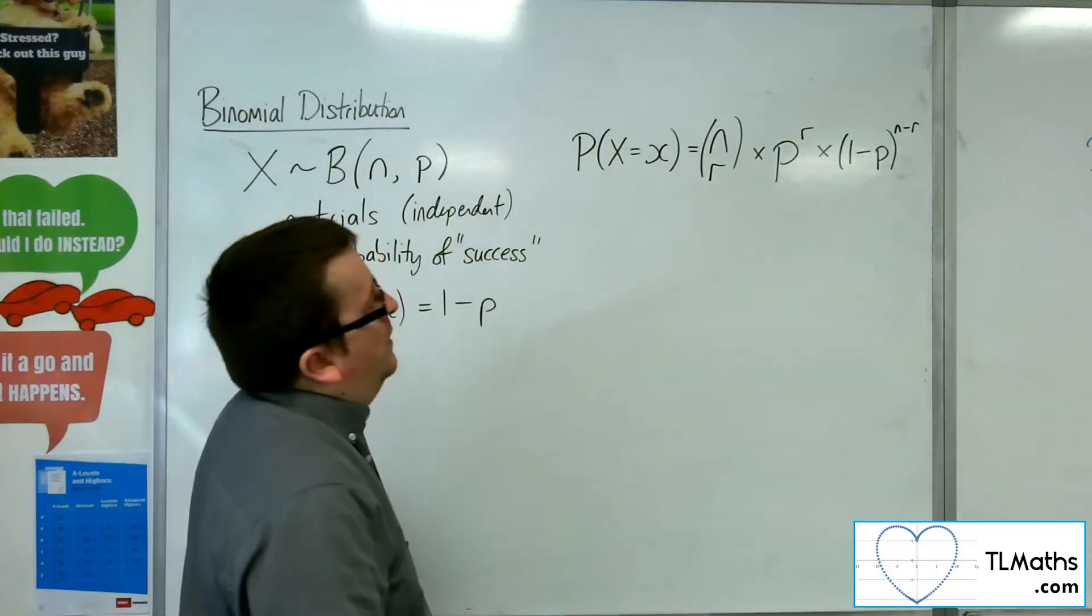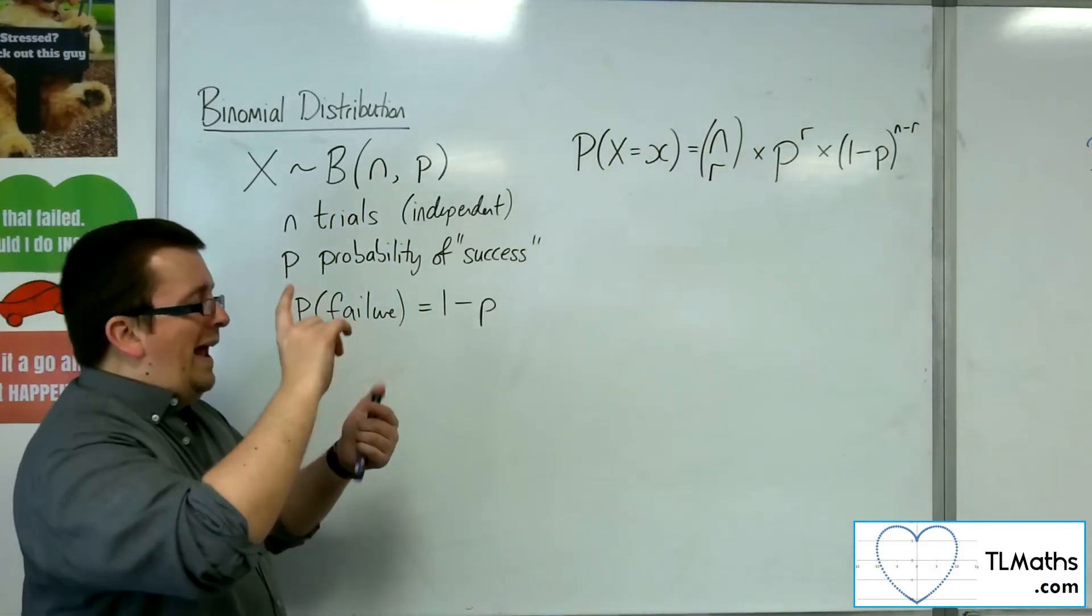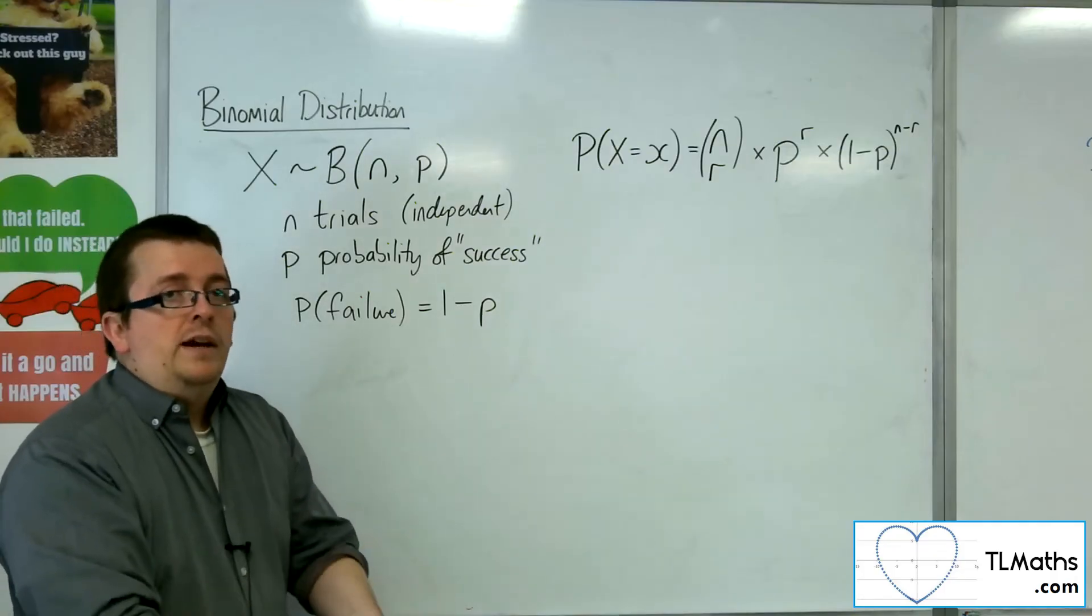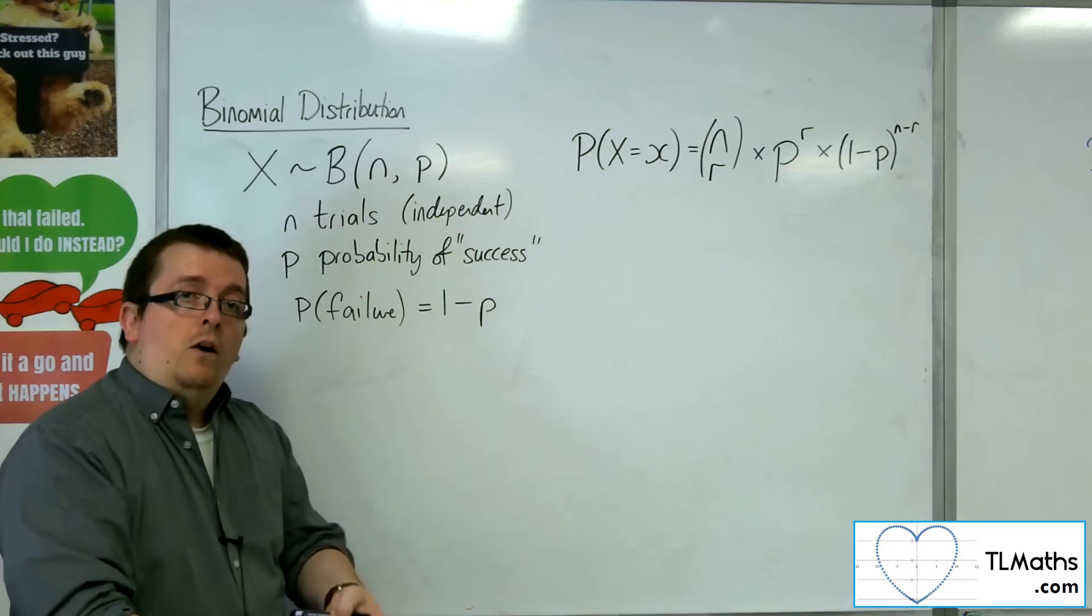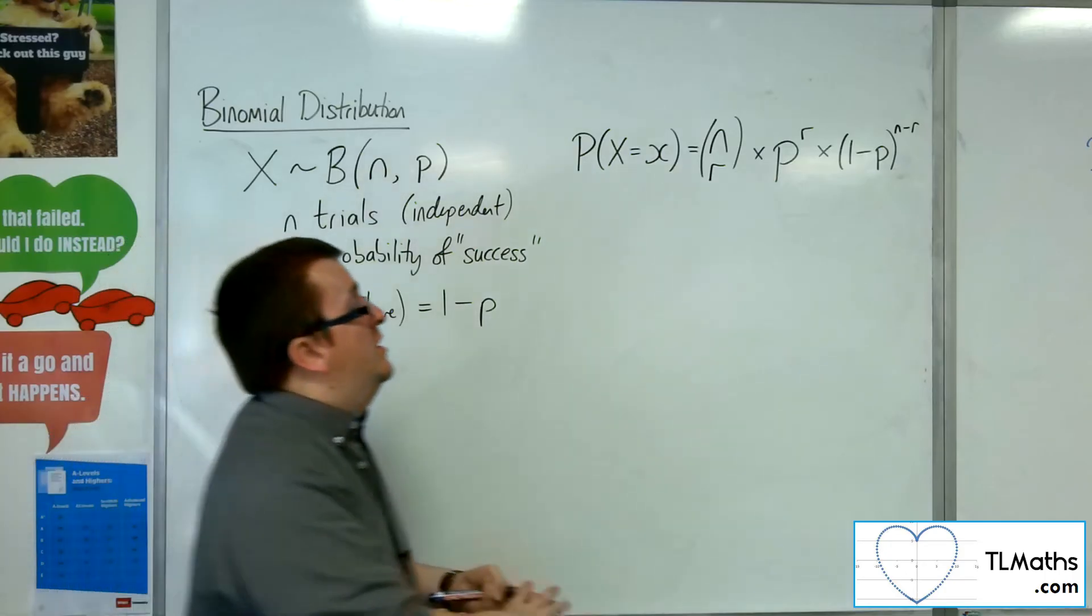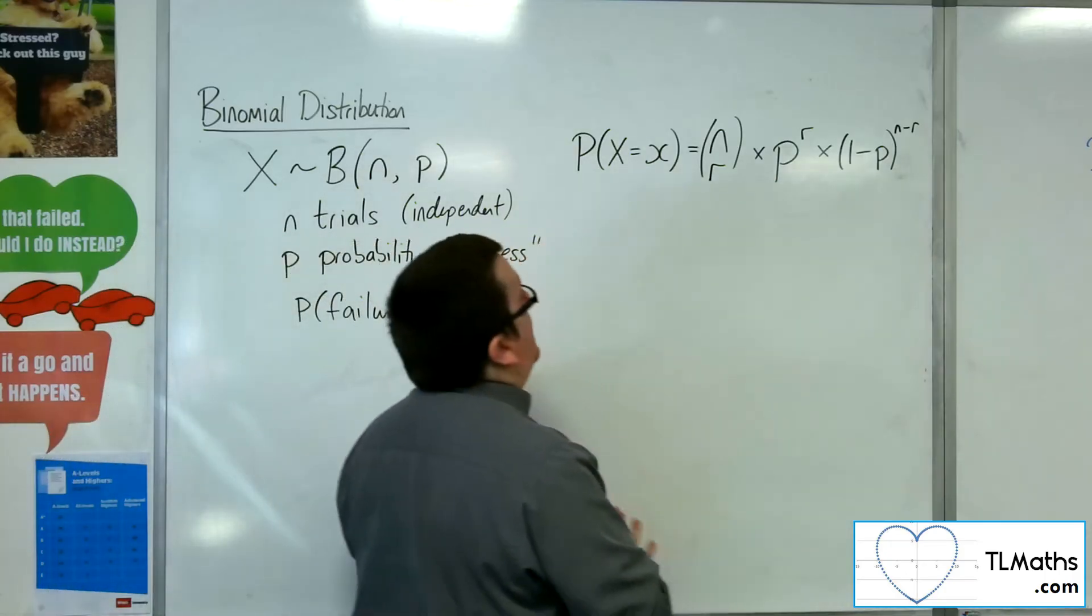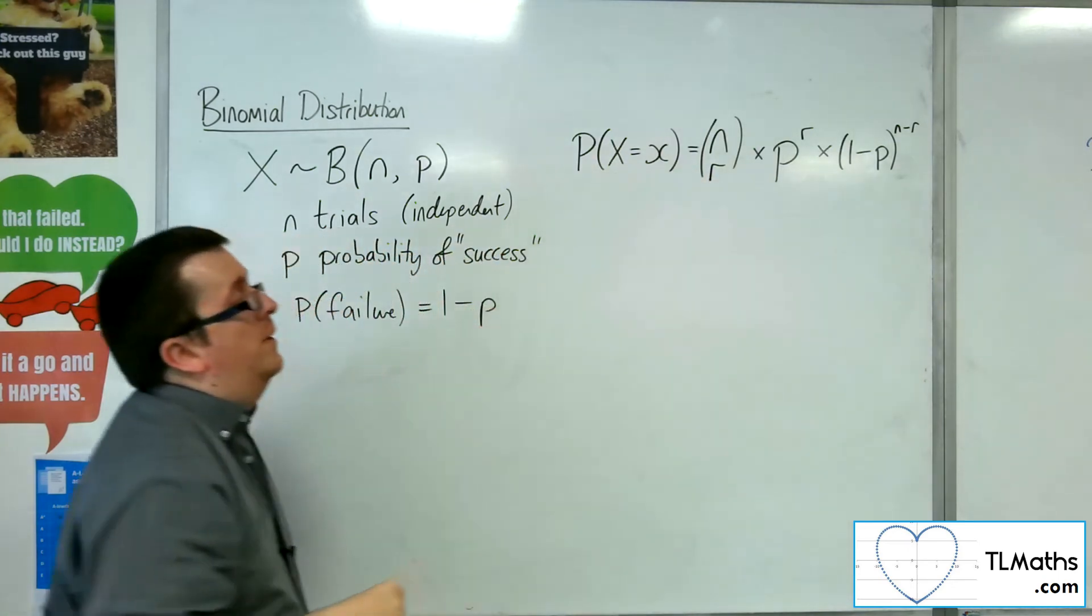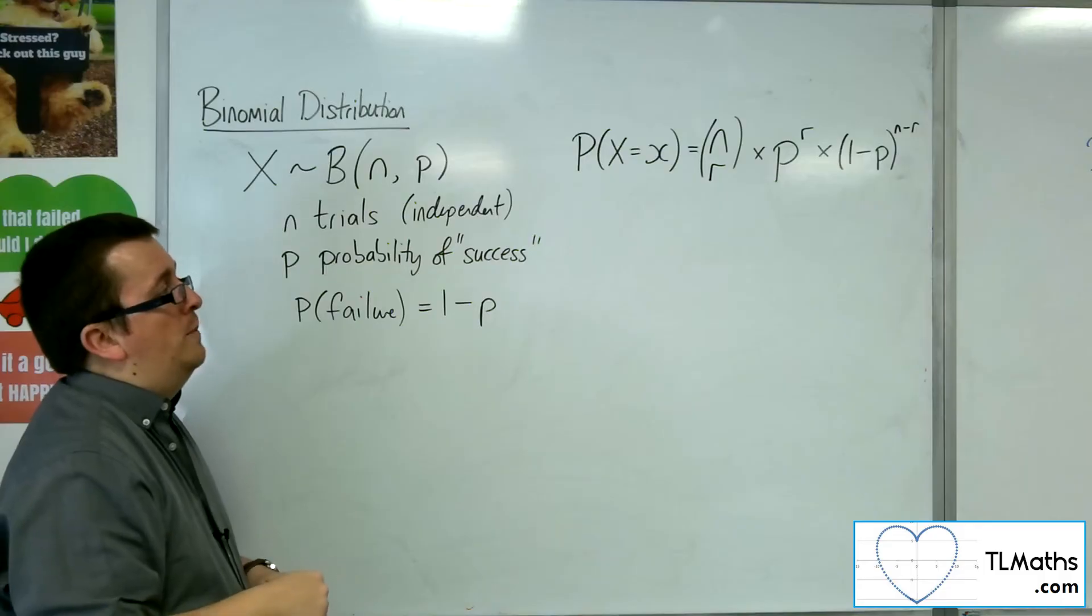So if you know how many trials there are, and you know how many successes you want, and you know the probability of success, you can substitute those three bits in, the p, the n, and the r, into that problem, into that formula.